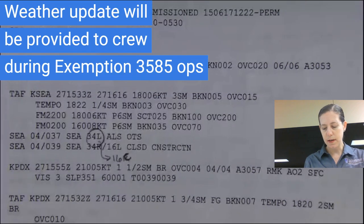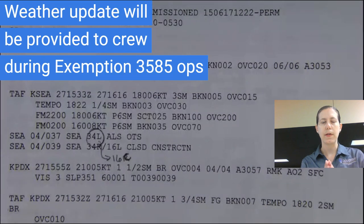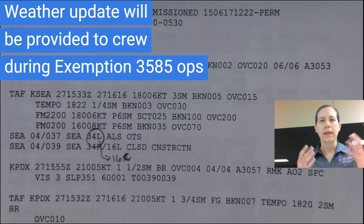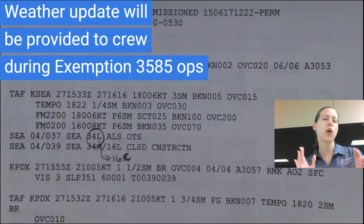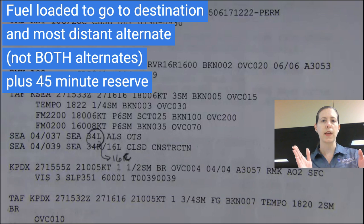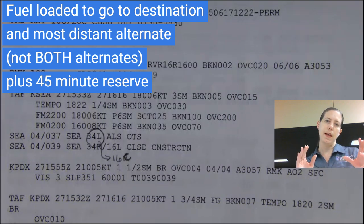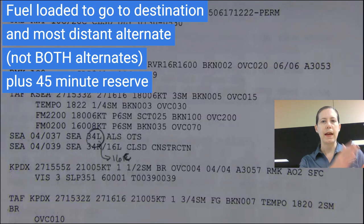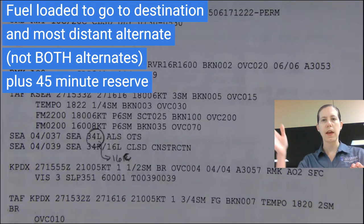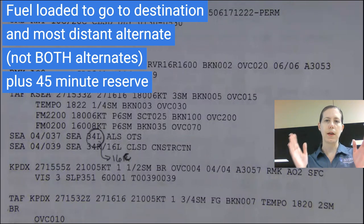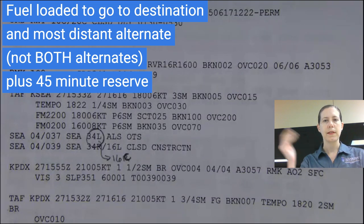Because we are releasing under exemption 3585, I will definitely provide you an en route update so you can see where it would be best to go. I've loaded enough fuel to go to your farthest alternate, San Jose, and then 45 minutes after that. I have not loaded enough fuel to go from Seattle to Portland to San Jose and then another 45 minutes — we have enough for the most distant alternate plus your reserve.